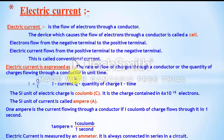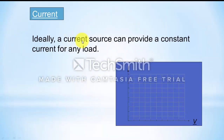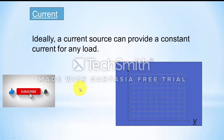As we discussed in the previous video, electric current is the flow of charge per unit time. Current I equals Q by T, where Q is the quantity of charge and T is the time. The SI unit of current is Ampere, which is Coulomb per second. Electric current is measured by an Ammeter, which is always connected in series in a circuit. Ideally, a current source must provide a constant current for any load.